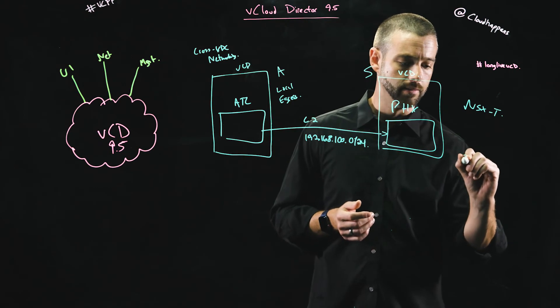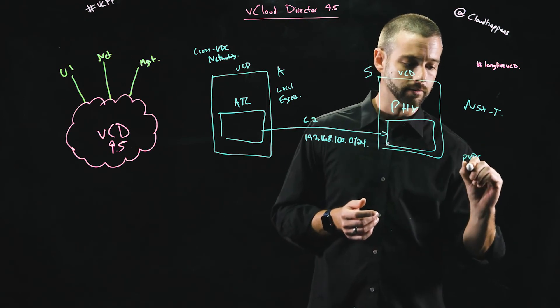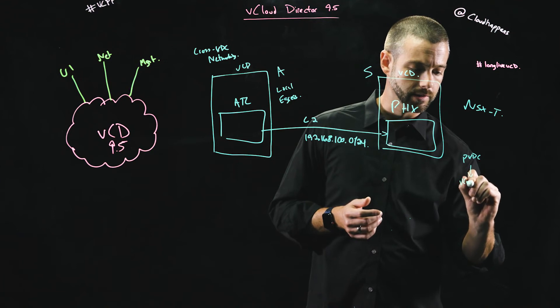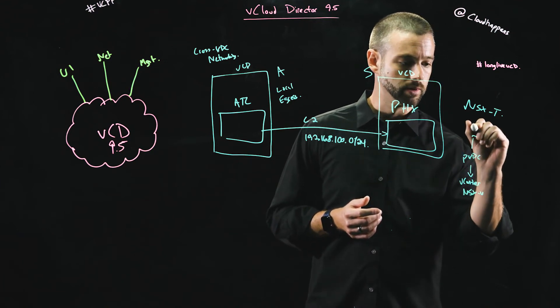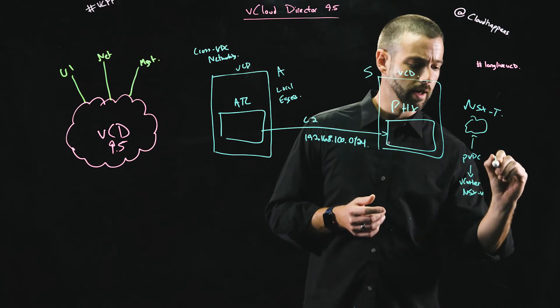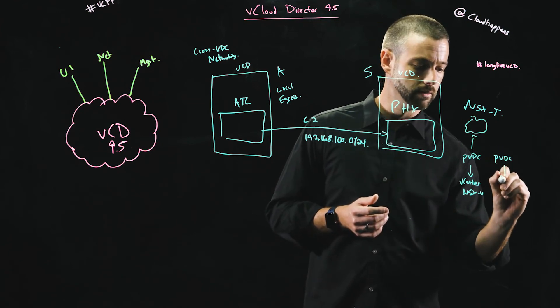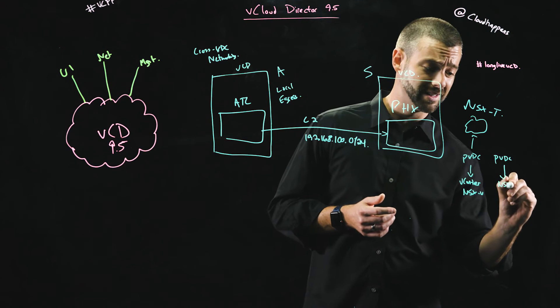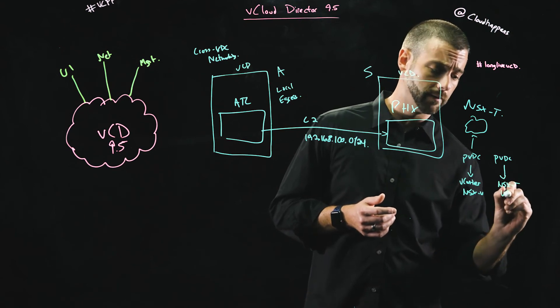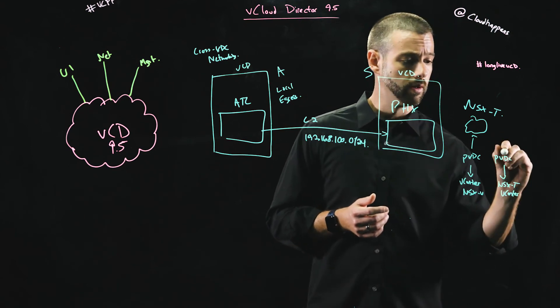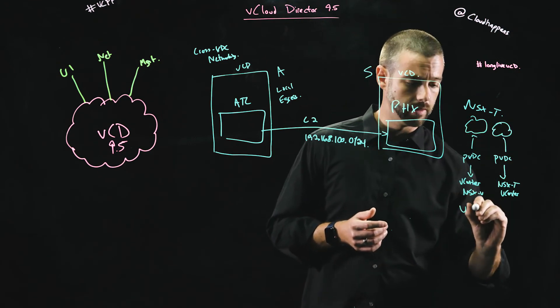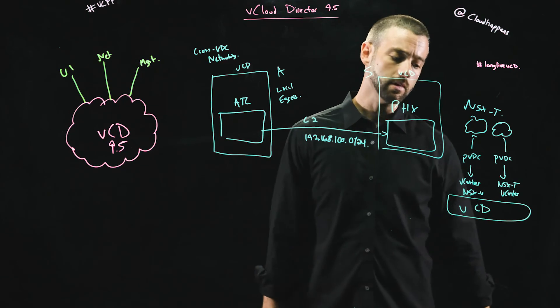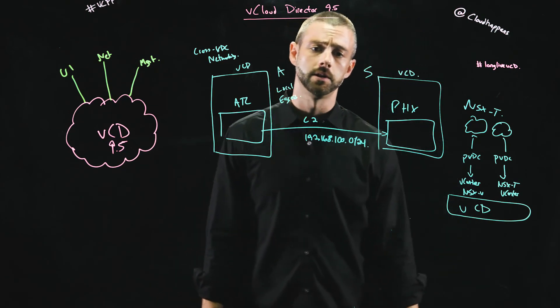I can have a PVDC inside of my vCloud Director that has vCenter and NSX-V, and this is providing resources out to users. And I can also have a PVDC that's mounted to maybe just an NSX-T function with a vCenter under the covers, also providing resources, all within the same vCloud Director solution and interface.